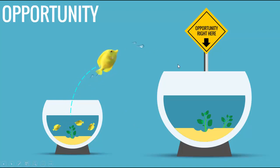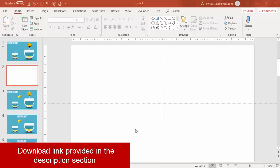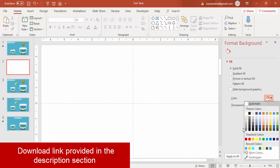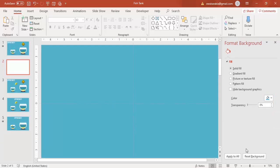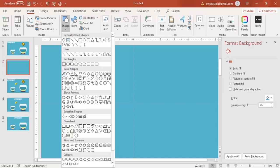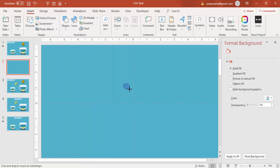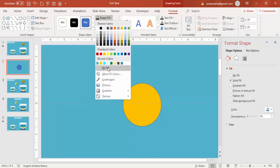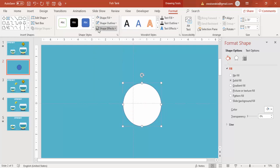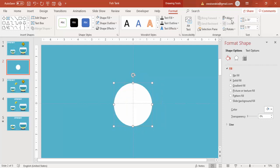Let's see how to create this opportunity slide in PowerPoint. Add a new slide, change the background color — right mouse click, say Format Background, and select any aqua color. Then go to Insert Shapes, select an oval shape, and draw a perfect oval by holding the Shift key. Set the shape fill to white and shape outline to no outline, then align center and align middle.